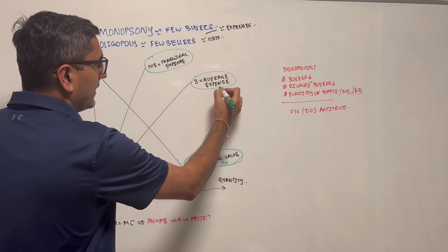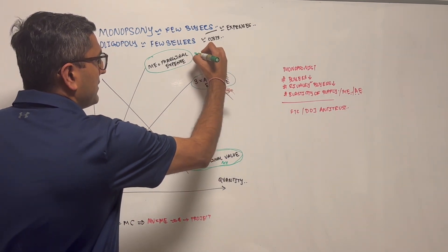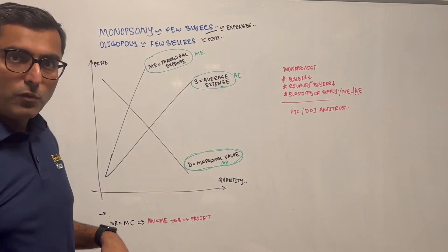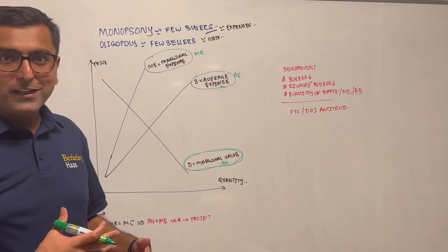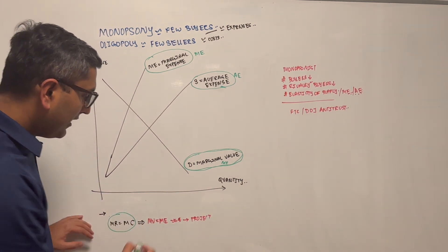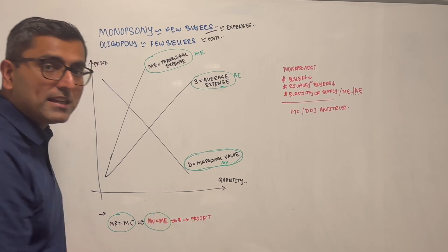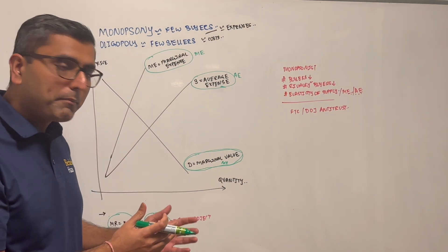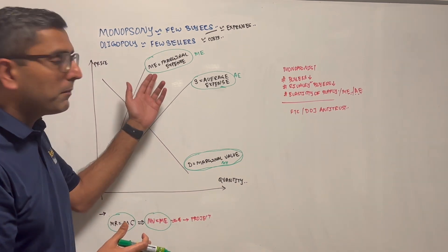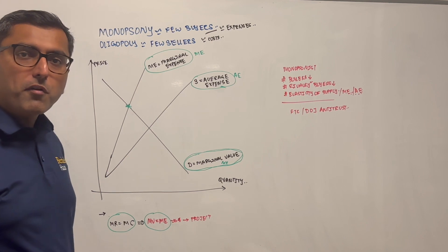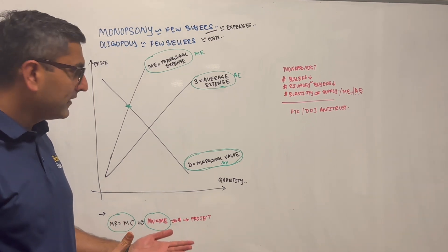We had MR equals MC when it comes to sellers - remember that? That's where we have maximum profits. Similarly, MV equals ME - the value that marginally you get as a buyer is equal to the marginal expense. At this point, there is maximum profit for you as a buyer.